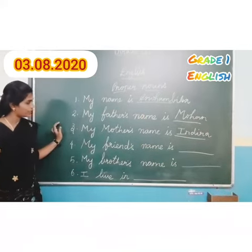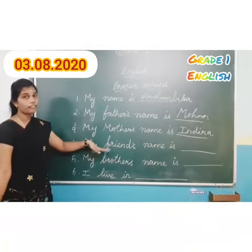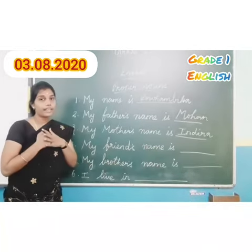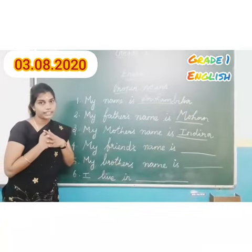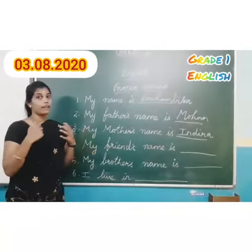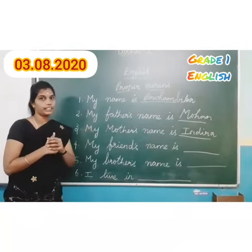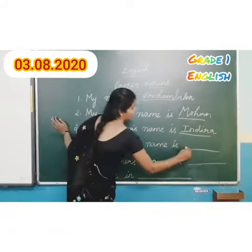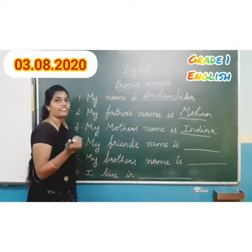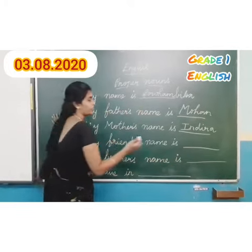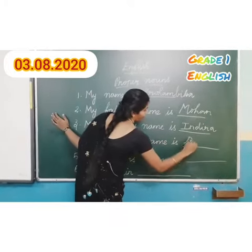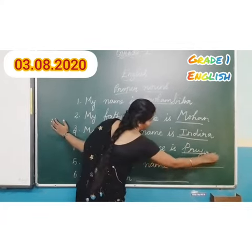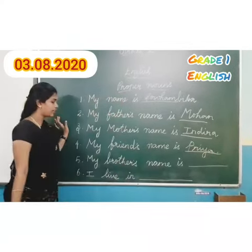Now, come to the fourth question. My friend's name is — when many friends are there, I am going to write only one name here. My friend's name is Asha, Priya, Niveda. Since many friends are there, I am going to write one name. I am writing it as Priya.